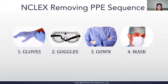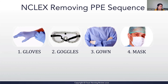When removing your PPE, the sequence is again very critical and NCLEX really wants you to know this. You remove the contaminated gloves first, then the goggles, then the gown — remember, from inward out, rolling it away from you. And finally, you remove your mask. When removing goggles or mask, make sure you're not touching the outside surfaces — you use the strap. Everything on the outside is considered contaminated.